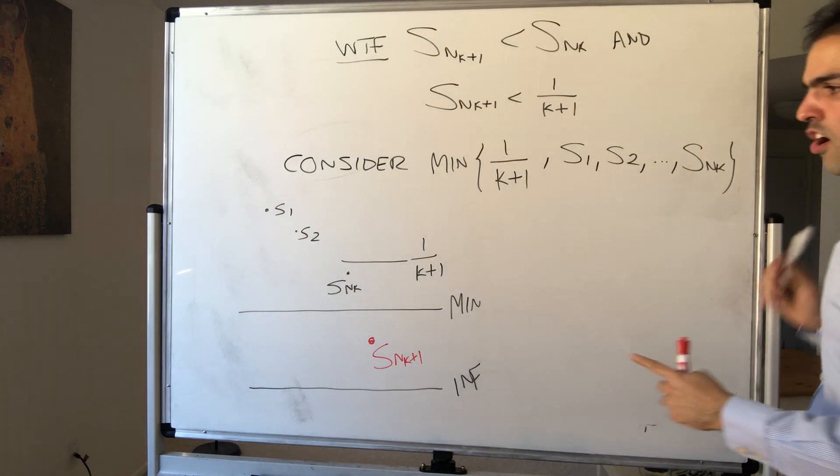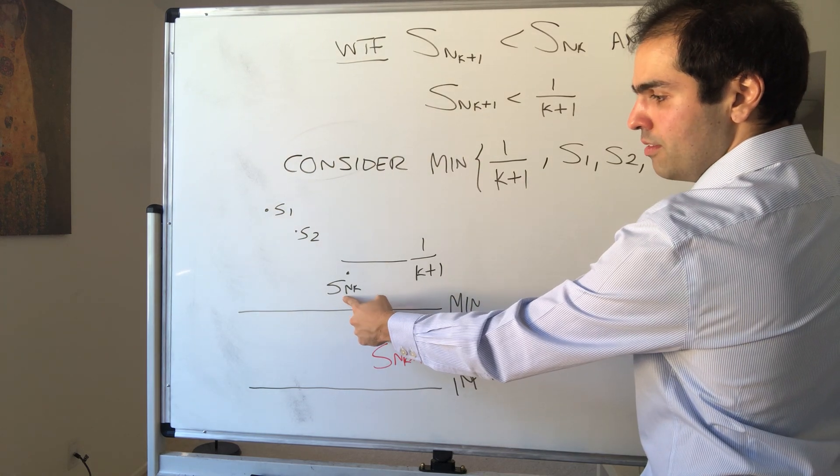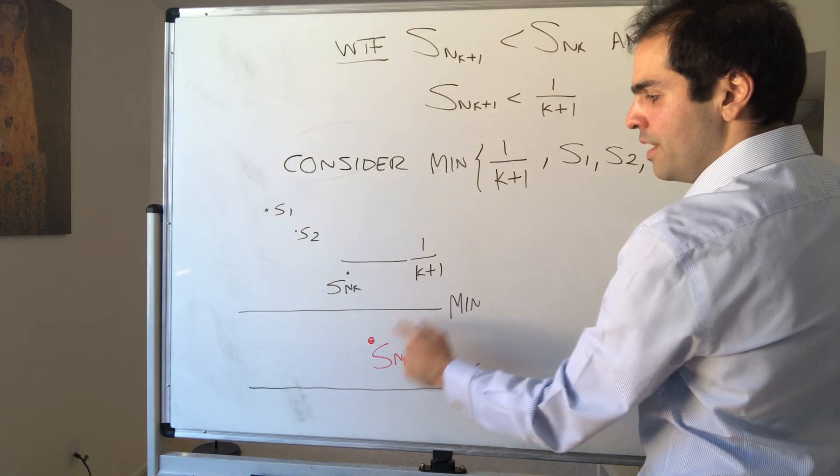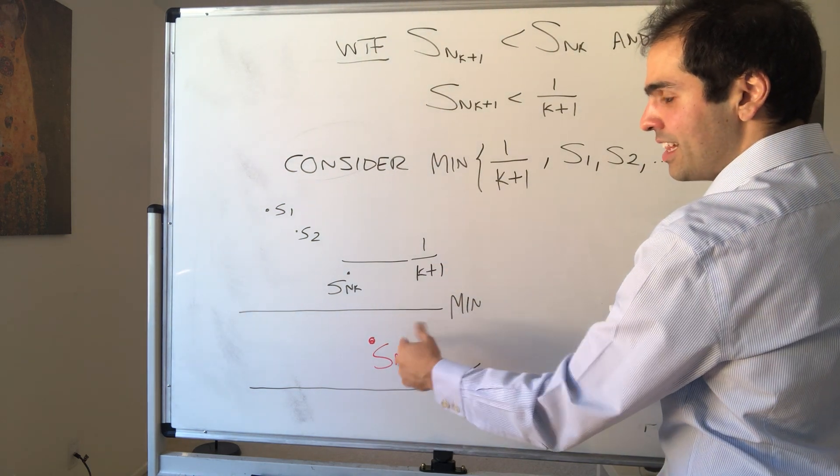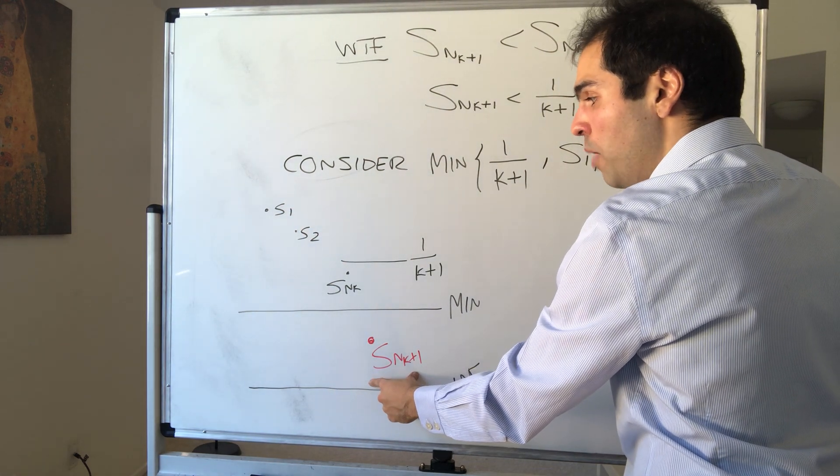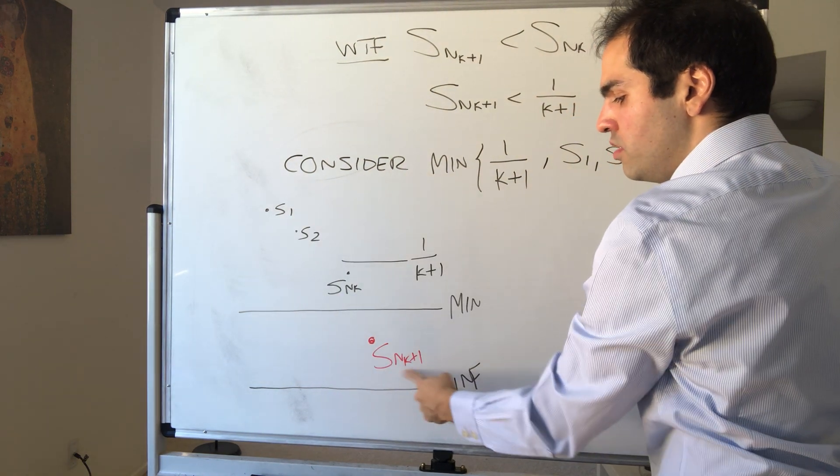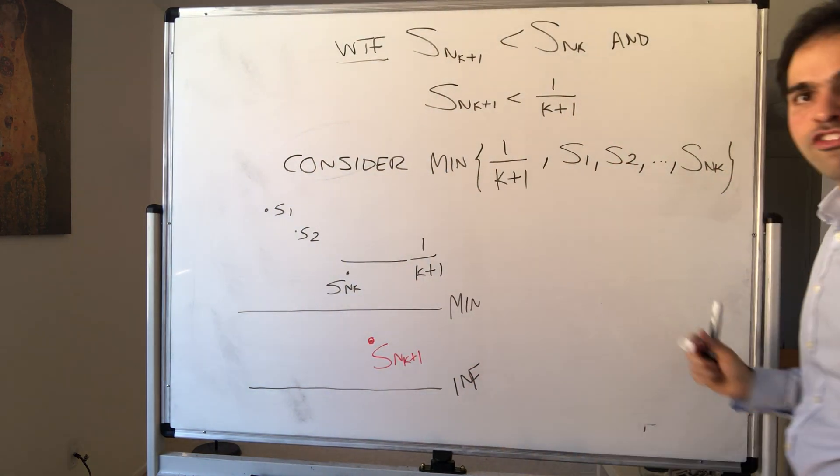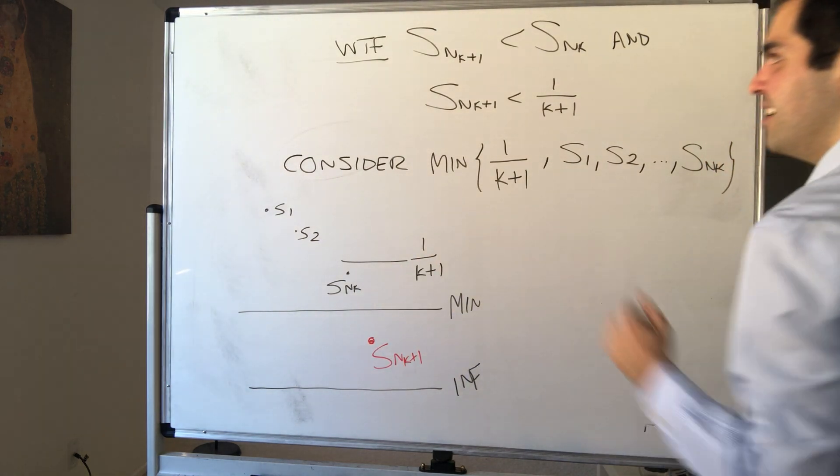And why does that solve our problem? Well, it's smaller than Snk, because you see this is bigger than that, but it's also smaller than 1 over k plus 1, because again, it's smaller than that. And because, just like last time, because it's a new stop, we get that it cannot be one of the old stops. So definitely this has to come way after all the previous stops. So that's why it's really a subsequence.